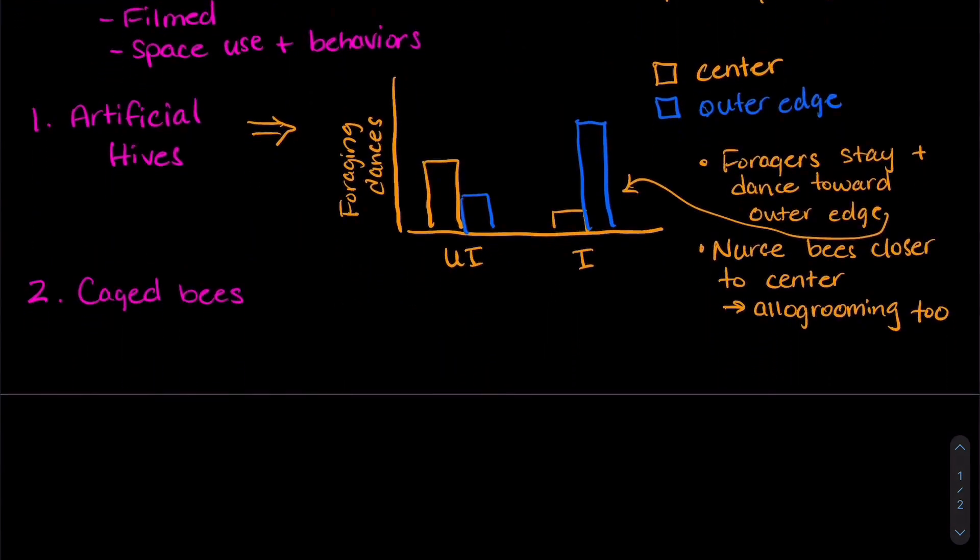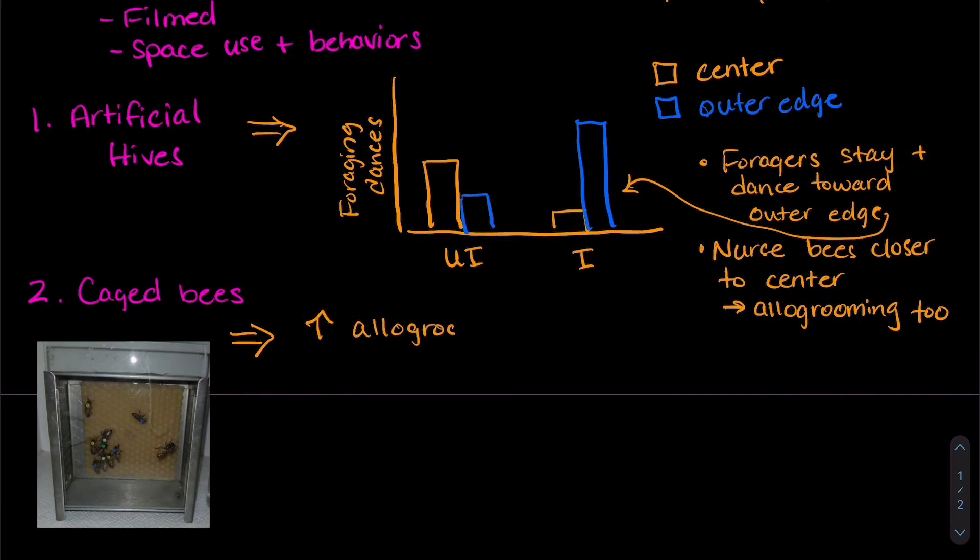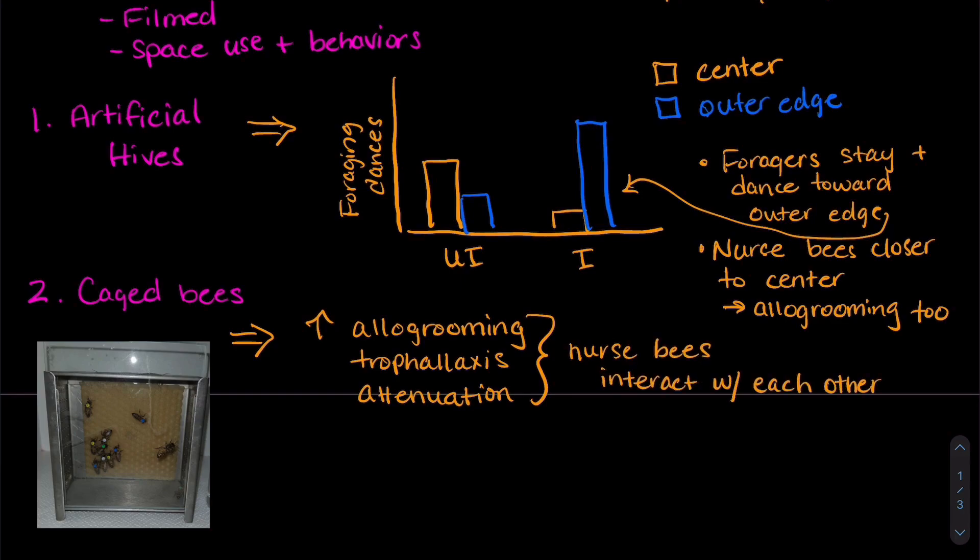For the caged bee experiment, the researchers actually saw increases in allo grooming, trophallaxis, and attenuation. This meant that the nurse bees actually interacted more with each other, which surprised the researchers.